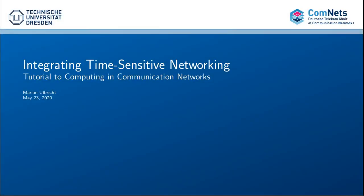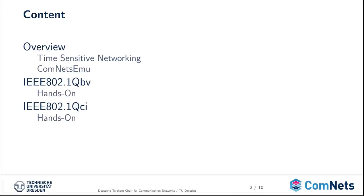Hello everybody, this is Marian Ulbricht, and in this video you will get a short tutorial to the book chapter Integrating Time-Sensitive Networking. On the agenda we have a short overview about time-sensitive networking and how it is realized in the ComNets emulator. Later on we will have a short hands-on tutorial about IEEE 802.1 QBV, which is the time-aware shaper. At the end there is another tutorial about 802.1 QCI, which is the per-stream filtering and policing implementation.